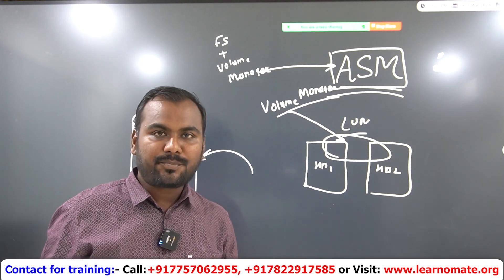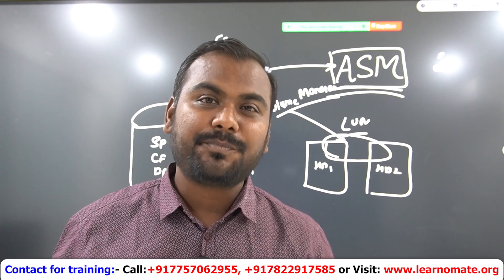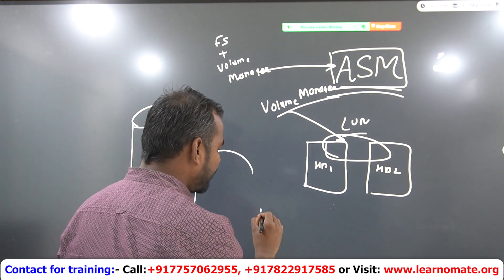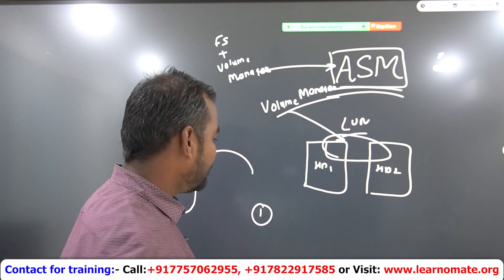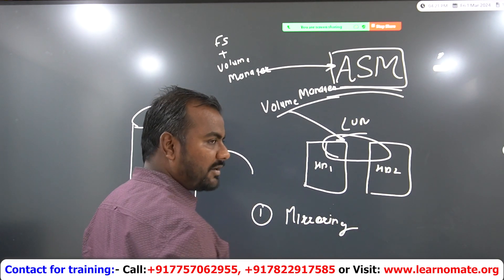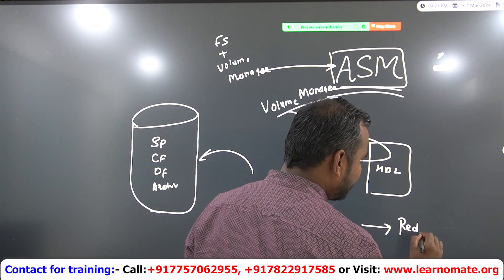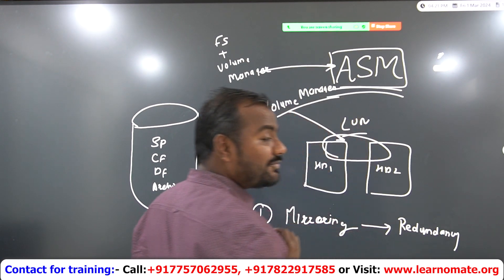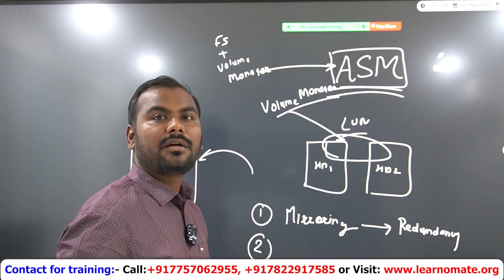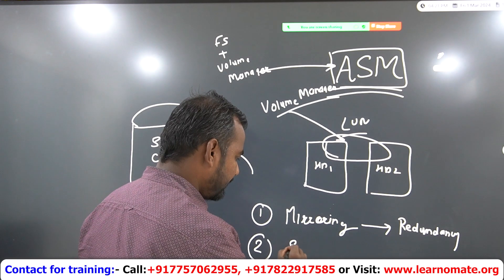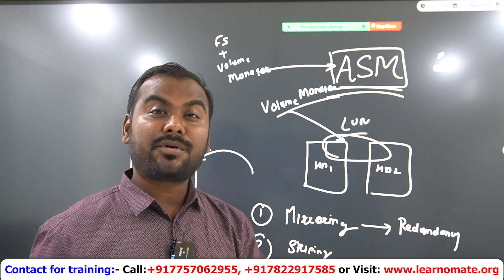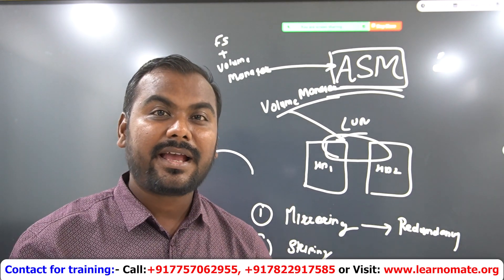So what does ASM provide? Since it is an Oracle-created product, there are two important features provided by ASM. One is called mirroring — some people also call it redundancy. And there is one more feature provided by ASM: we call it striping, S-T-R-I-P-I-N-G. Striping and mirroring are the two important features provided by ASM.